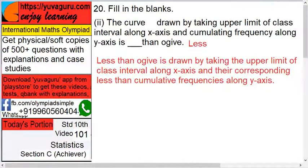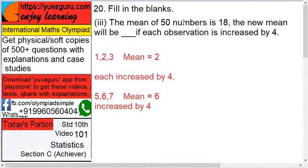Next, the mean of 50 numbers is 18. The new mean will be ____ if each observation is increased by 4. Now don't go for these 50 numbers. Let's take an example of 3: 1, 2, 3. These are the three numbers. Mean is what? 2. Mean means average: 1 plus 2 plus 3 upon 3, that is 2.